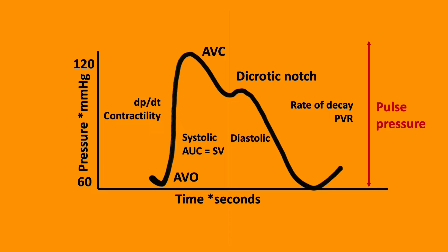The highest point is the systolic pressure, and then you get the systolic decline. The aortic valve closes, and you get a dicrotic notch. This leads to a diastolic runoff and end-diastolic pressure. The rate of decay is secondary to peripheral vascular resistance.